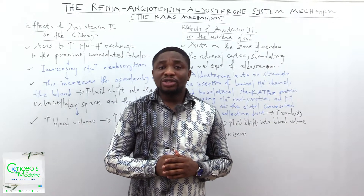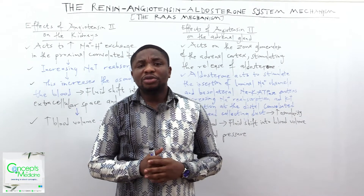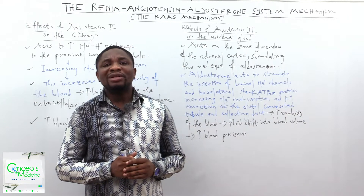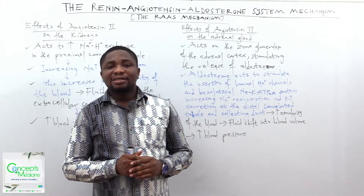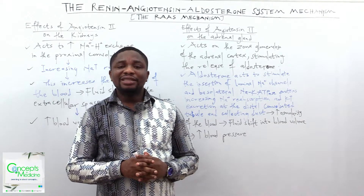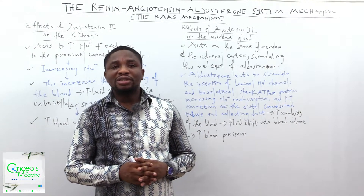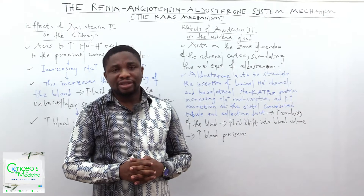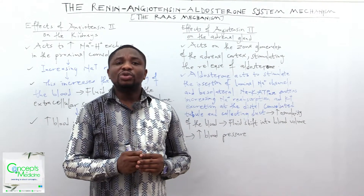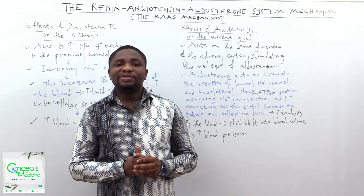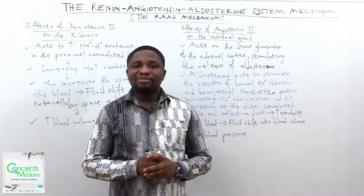Aldosterone acts to stimulate the insertion of luminal sodium channels and basolateral sodium-potassium ATPase proteins at the distal convoluted tubule and collecting duct. This increases sodium reabsorption and potassium excretion. Increased sodium reabsorption raises blood osmolarity, resulting in fluid shifts into the blood volume and extracellular space, increasing blood pressure.